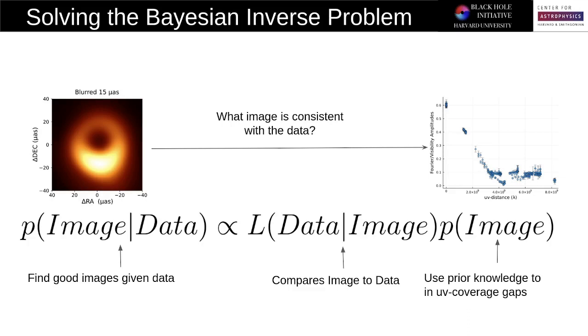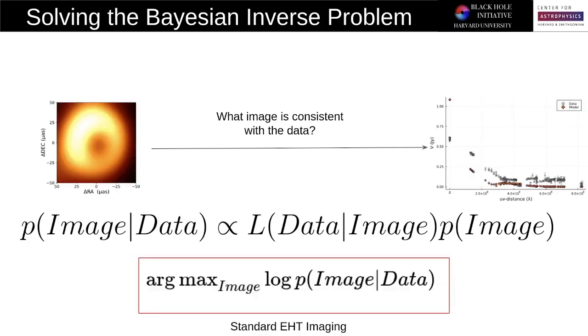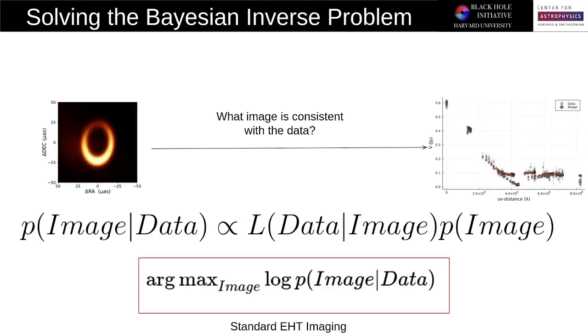However, this is a computationally difficult problem. And so most methods in the EHT instead just focus on finding the so-called best image, which essentially turns the imaging problem into a simple optimization problem where a random initial guess is passed, and then we optimize the log posterior density until we get the so-called best image.